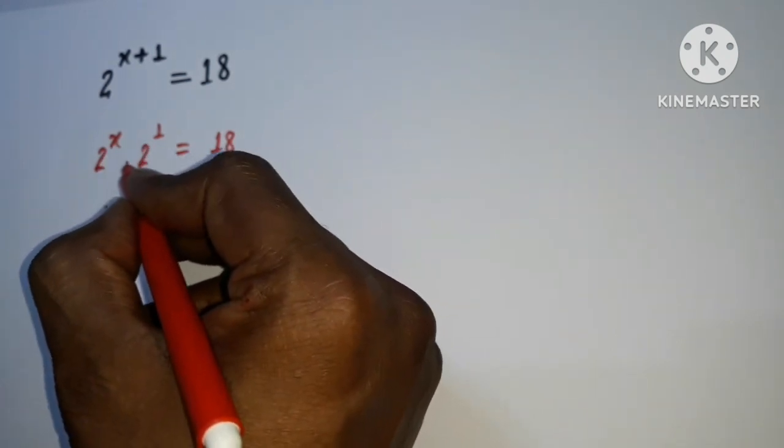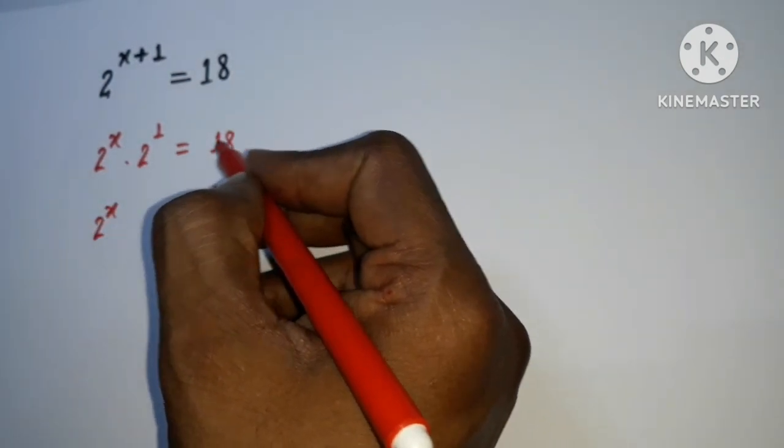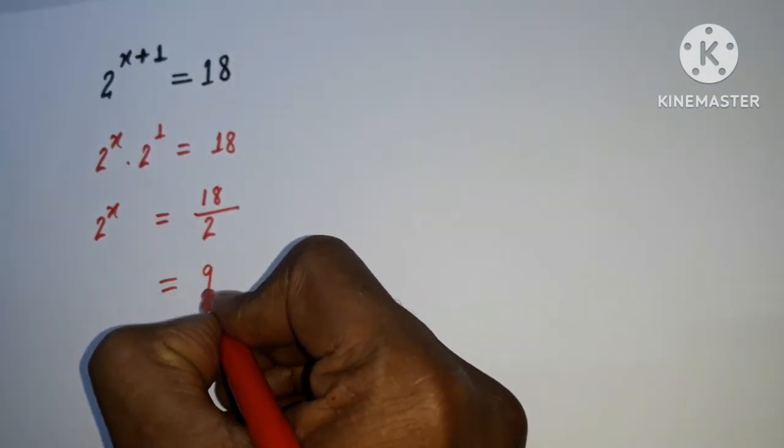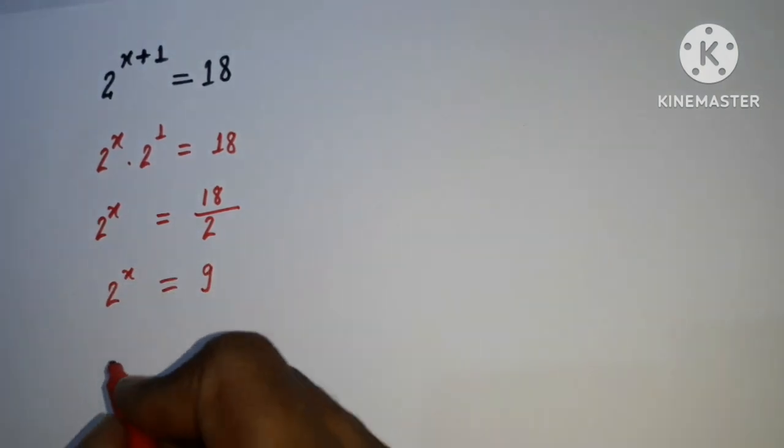So it is in multiplication format and it will go on the right side and will be divided here. So we will get 2^x = 9.